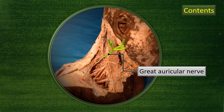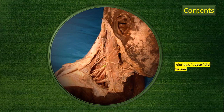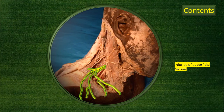Next is the great auricular nerve, which runs forwards, whereas the lesser occipital nerve follows the posterior border of the sternocleidomastoid towards the occipital region. The great auricular nerve covers the external ear and the skin over the parotid gland. The third nerve is the transverse cervical nerve, which winds around the posterior border and runs forwards toward the anterior midline of the neck.